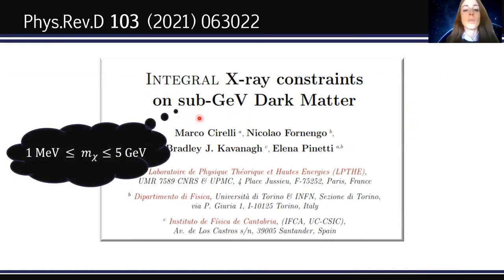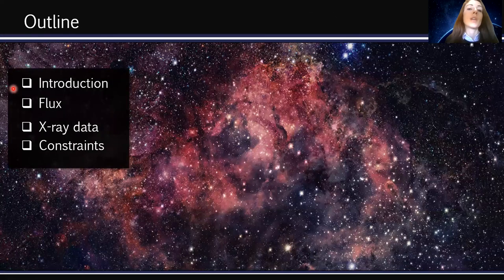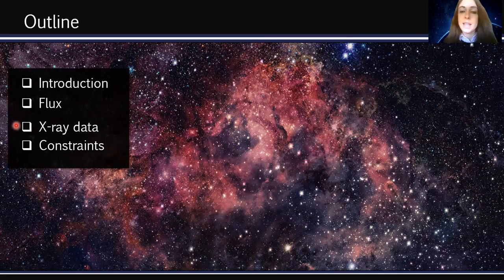In the title of our paper we refer to sub-GeV dark matter — we mean dark matter particles with a mass between 1 MeV and 5 GeV. In the following, I will give a brief introduction on dark matter searches with photons, then introduce the key elements needed to compute the dark matter flux, then discuss the X-ray data used in our analysis, and finally present our constraints with and without astrophysical background.